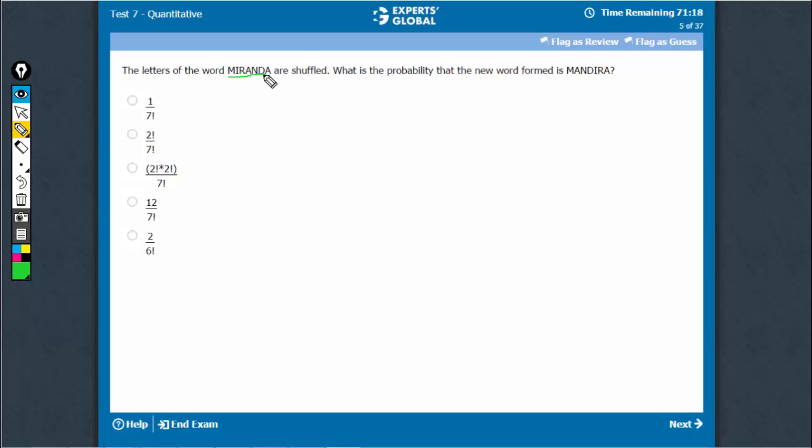Miranda can be shuffled in 7 factorial ways with 2 repetitions of A, so 7 factorial upon 2 factorial ways.